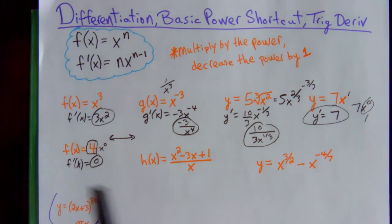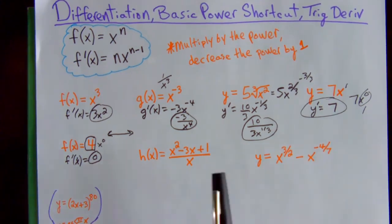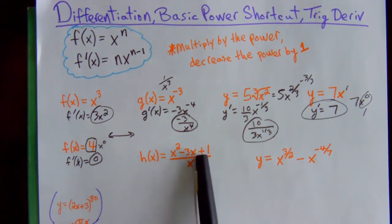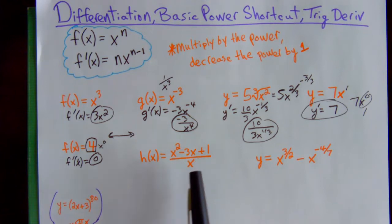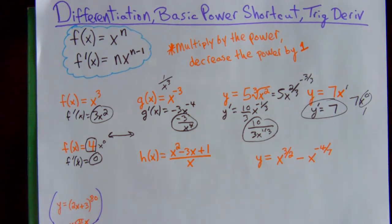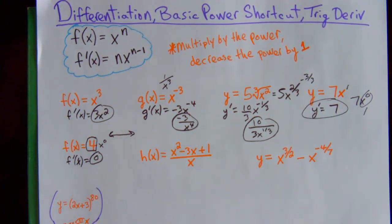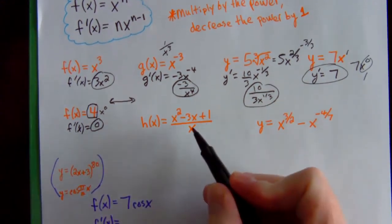When you have quotients or products, you cannot take the derivative of the top and bottom separately and then divide. You also can't take the derivative of each factor in a product separately and then multiply. Those approaches are wrong.